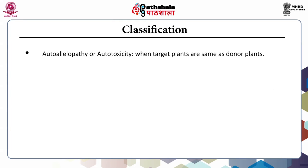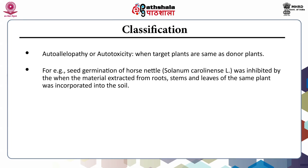Coming to autoallelopathy or autotoxicity: this occurs when the target plants are similar to the donor plants. For example, the seed germination of horse nettle (scientific name Solanum carolense) was inhibited by the presence of material extracted from the roots, stems and leaves of the same plant when incorporated into the soil.